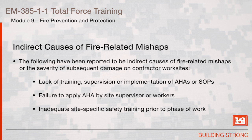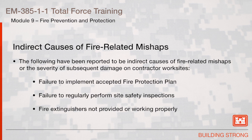The following have been reported to be indirect causes of fire-related mishaps or the severity of subsequent damage on contractor work sites: lack of training, supervision or implementation of AHAs or SOPs, failure to apply AHA by site supervision or workers, inadequate site-specific safety training prior to the phase of work, failure to implement an accepted fire protection plan, failure to regularly perform site safety inspections, and fire extinguishers not provided or working properly.